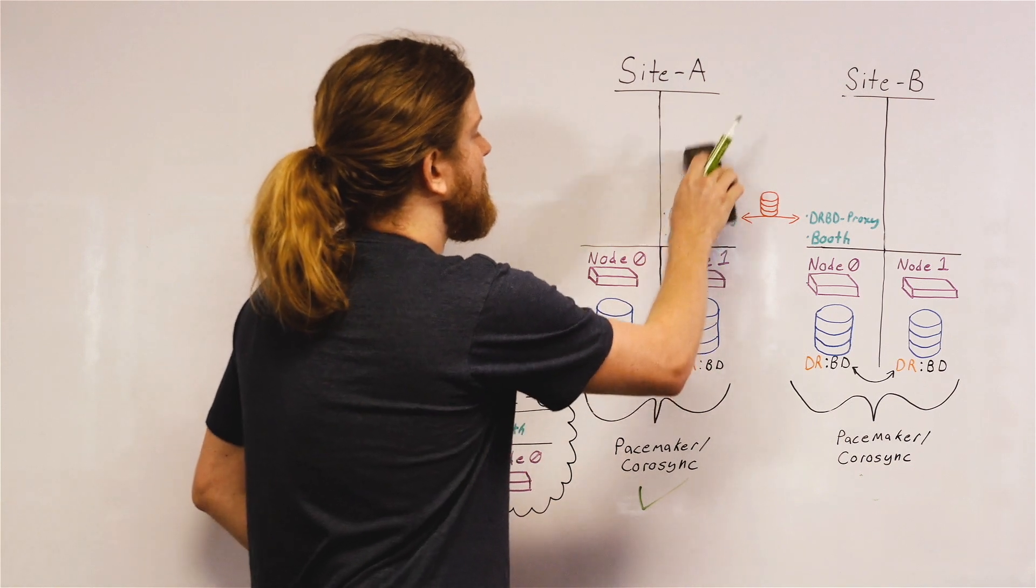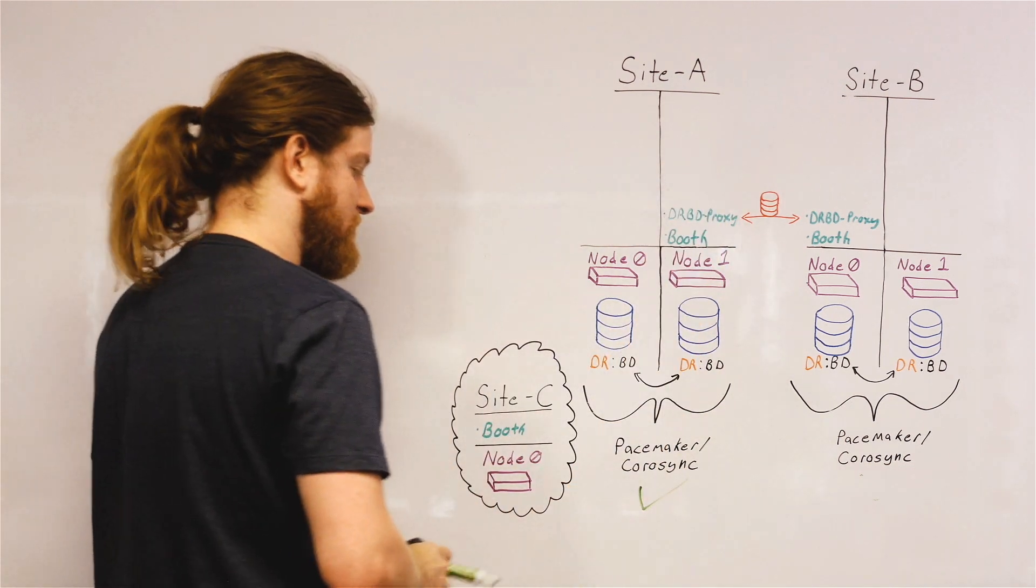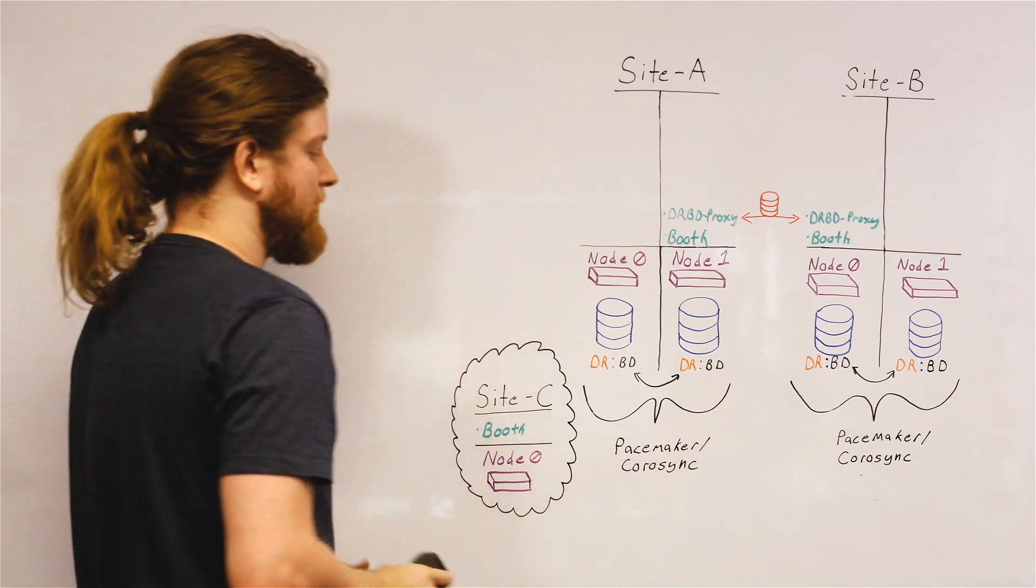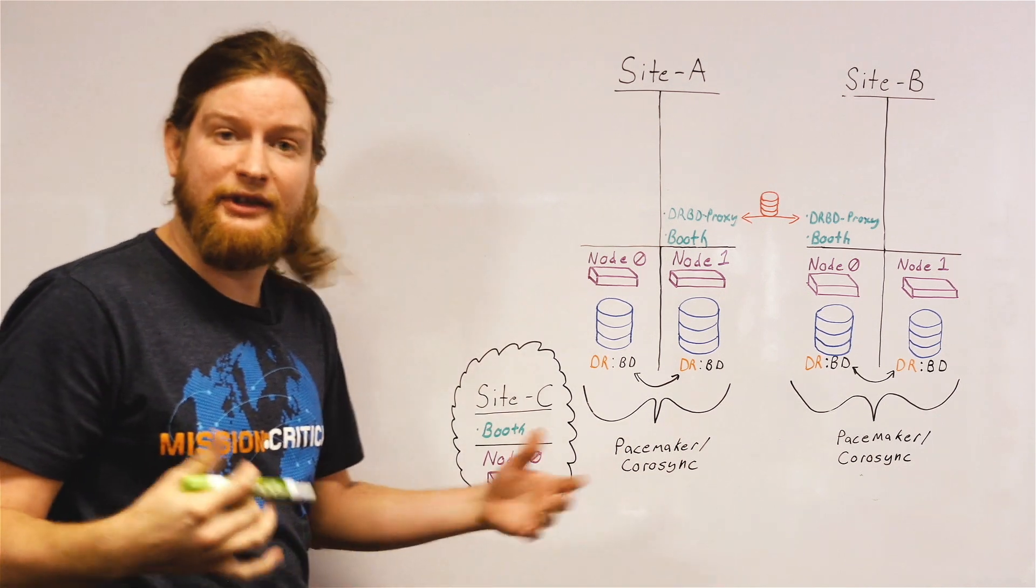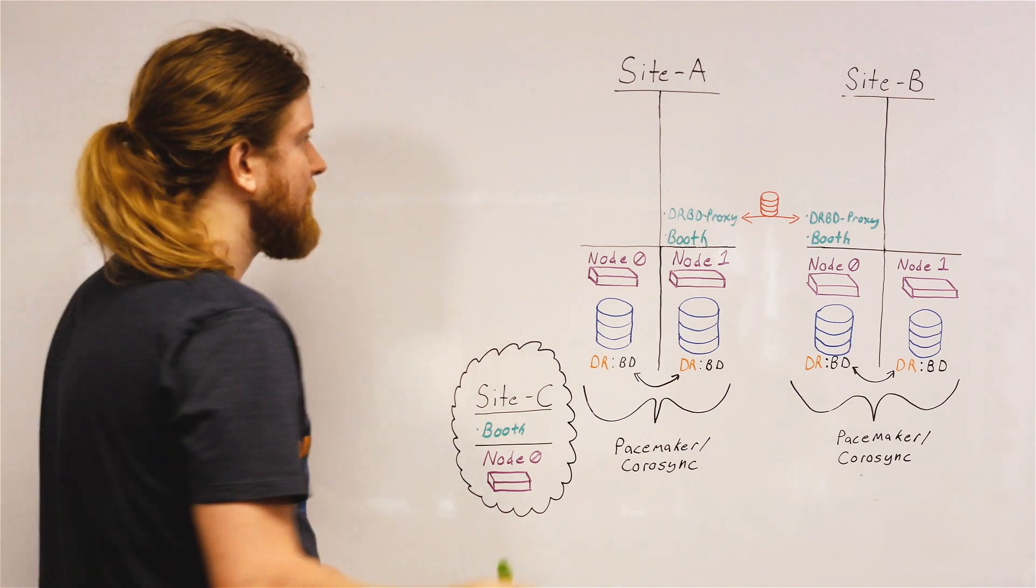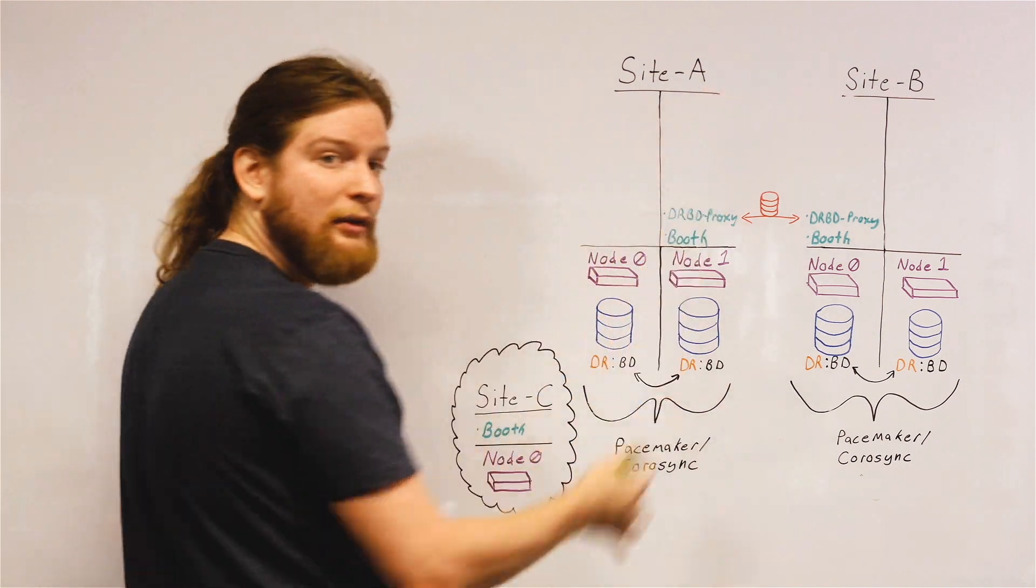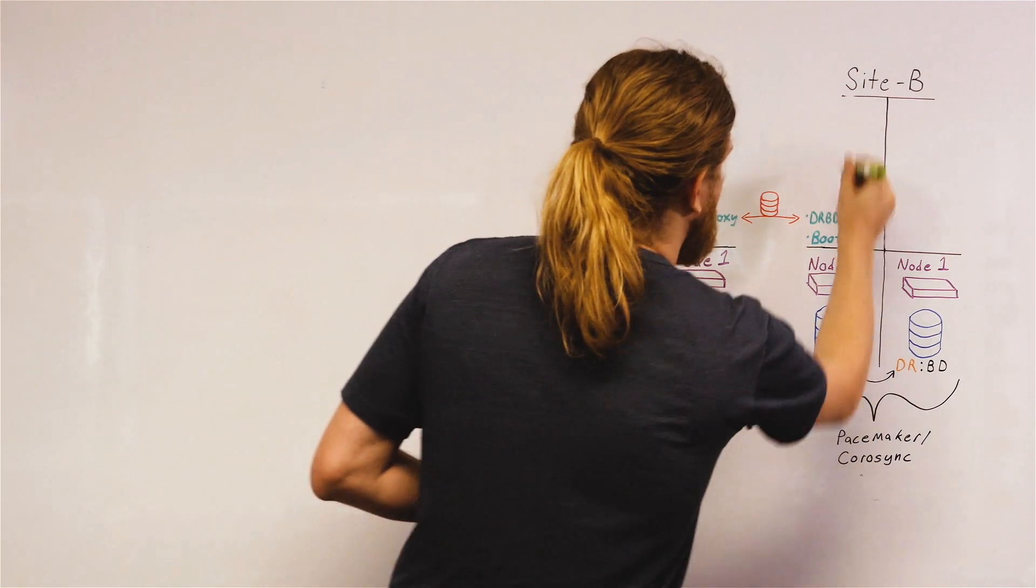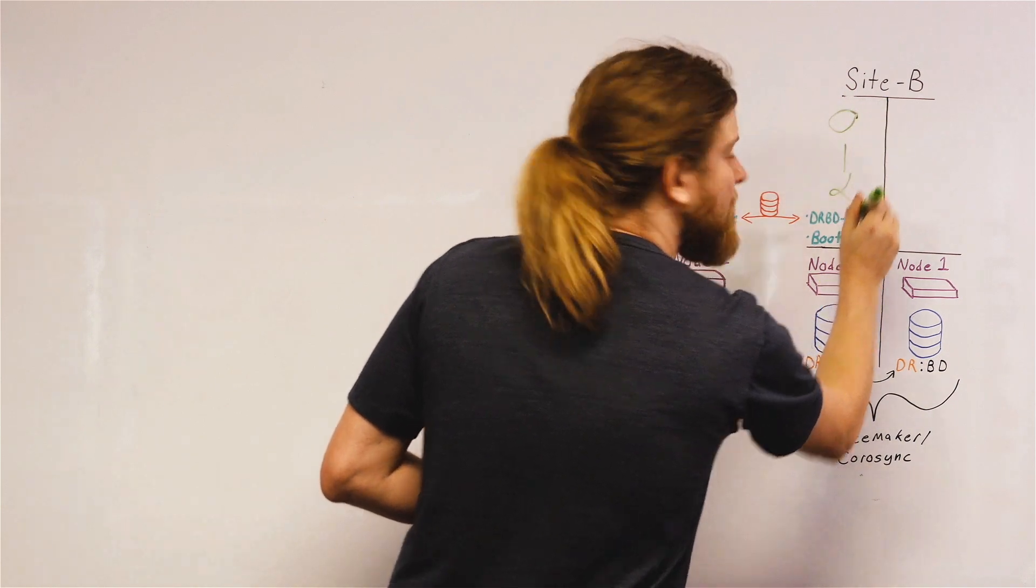And in this case, say that there are no services running. We can assign a ticket arbitrarily. So we can move services between sites. We can have something running on site A and say we just want it to run on site B. There doesn't have to be a failure.